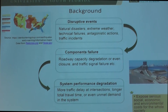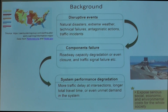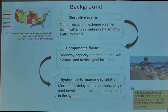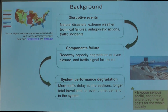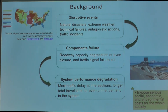As we all know, there are various types of disruptive events that could happen to not only transportation, but all critical infrastructure systems supporting our daily life, like natural disasters, extreme weather, and also man-made events. As a result, components of the transportation system could fail. If we treat the transportation system as a network, there are both links and nodes in the network.